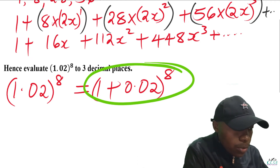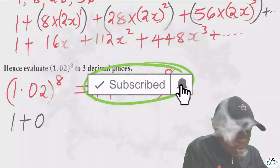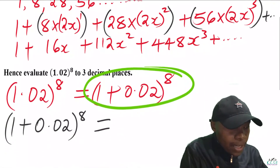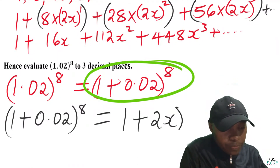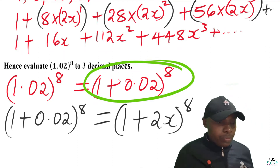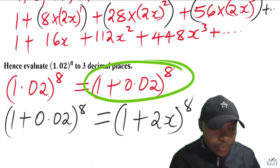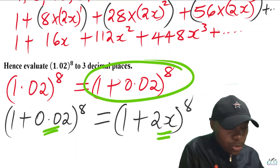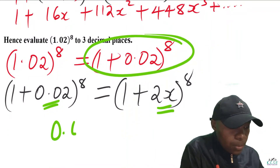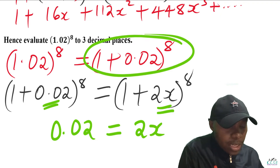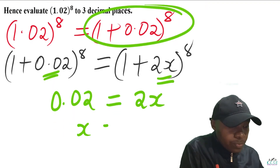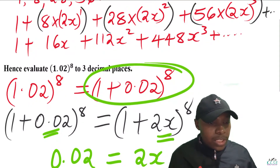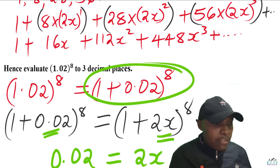So (1 + 0.02) raised to power 8 is equivalent to (1 + 2x) raised to power 8. After equating the two, everything is uniform apart from the values 0.02 and 2x. Those are the values we equate: 0.02 equals 2x, giving the value of x as 0.01. This value of x is what we substitute into the expansion obtained in the first part.